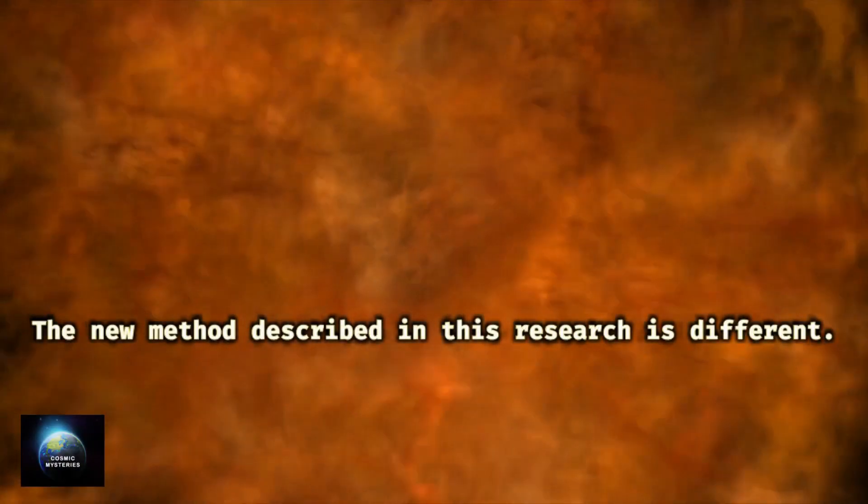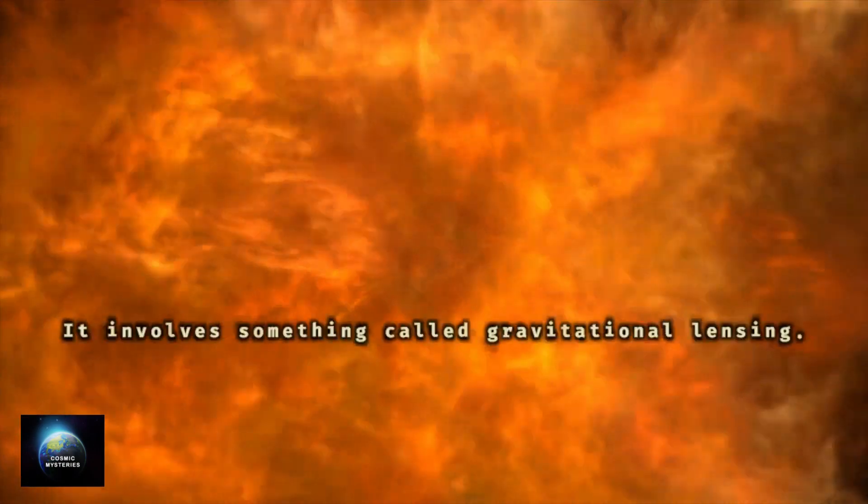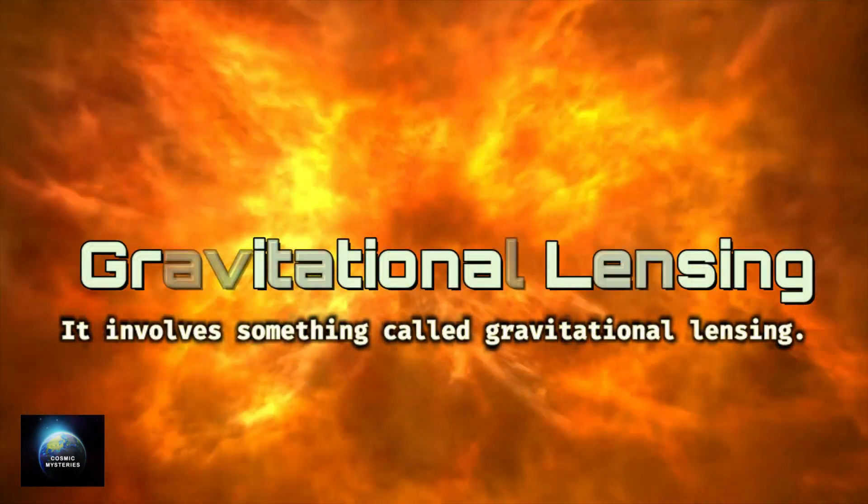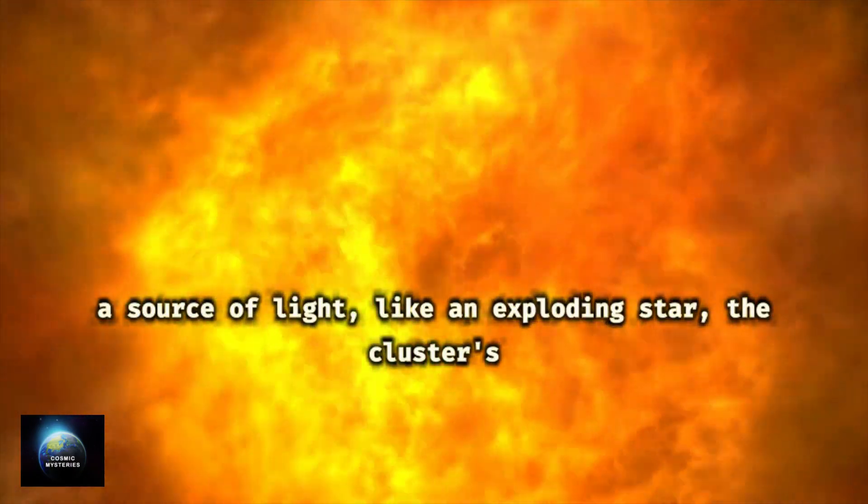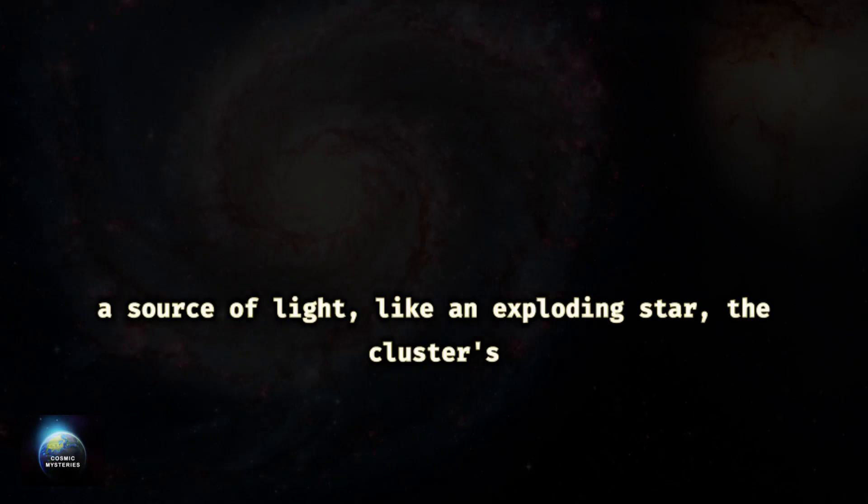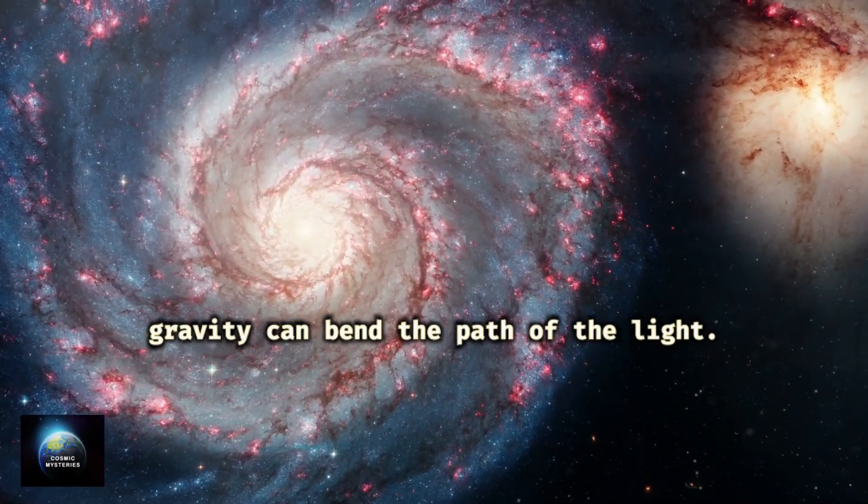The new method described in this research is different. It involves something called gravitational lensing. If there's a big cluster of galaxies in front of a source of light, like an exploding star, the cluster's gravity can bend the path of the light.